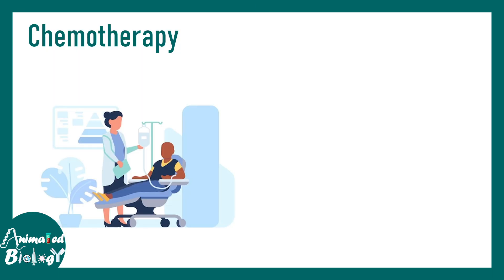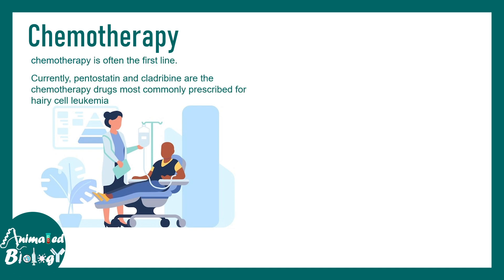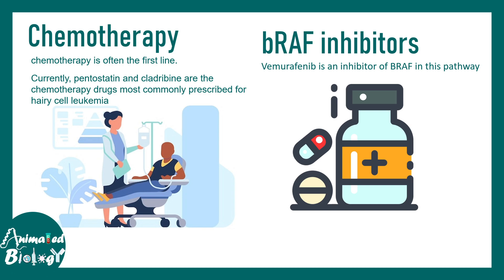For treatment, chemotherapy is often the first line. Currently pentostatin and cladribine are the two chemotherapy drugs commonly prescribed for hairy cell leukemia. Since the BRAF signaling pathway is specifically affected in this cancer, BRAF inhibitors are also an important therapeutic option. The inhibitor Vemurafenib is a BRAF kinase inhibitor that prevents over-proliferation and slows down cancer progression.